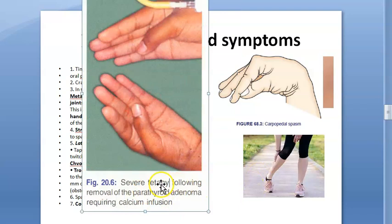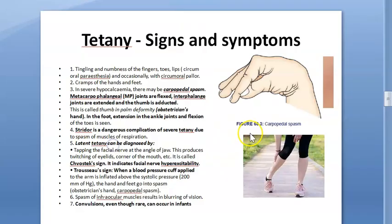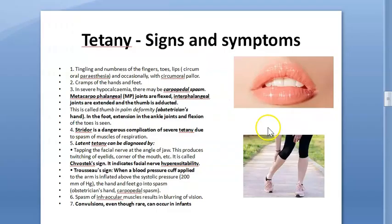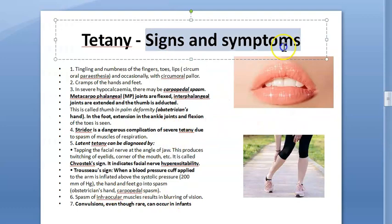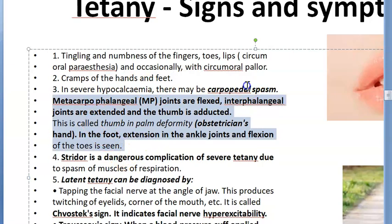This image shows severe tetany following removal of a parathyroid adenoma requiring calcium infusion. The thumb is adducted, the metacarpophalangeal joints are flexed, and the interphalangeal joints are extended — this is carpopedal spasm. 'Pedal' refers to the leg, so carpopedal spasm involves both the hand and leg.